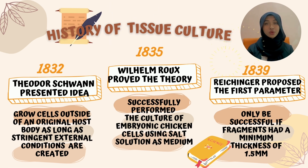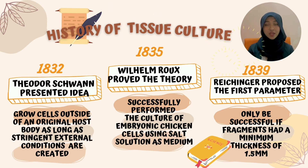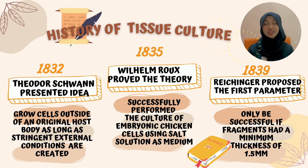Three years later, Wilhelm Ruh proved the theory in 1835, successfully performing the culture of embryonic chicken cells using a salt solution as his medium. Another four years later, in 1839, Wichinger proposed the first parameter for this method — that tissue culture is only successful if fragments had a minimum thickness of 1.5 mm; any thinner and the tissues will not be able to grow.